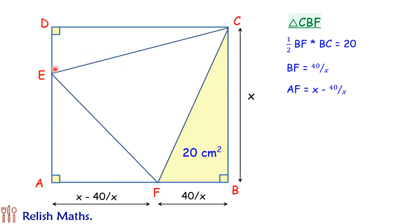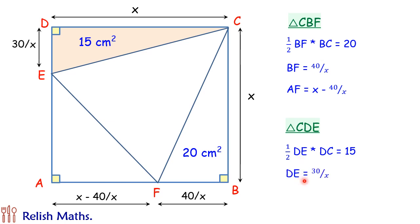Similarly looking at triangle EDC, this area is 15 cm squared. Again using formula half of base into height, so half of base into height is 15. Here DC is the length of the square which is x. So using it we'll get value of DE as 30 upon x. Now full length DA is x, therefore EA will be x minus 30 by x.